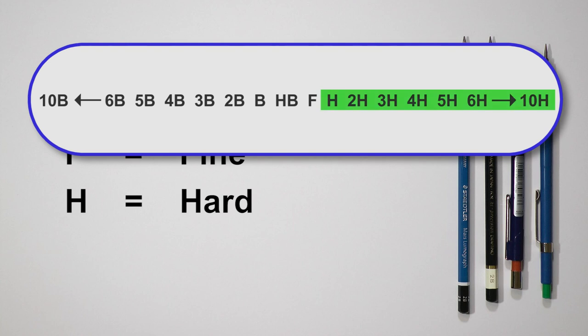Hard, the H's, range from H to 10H. The higher the number, the harder the lead and the lighter it will draw.